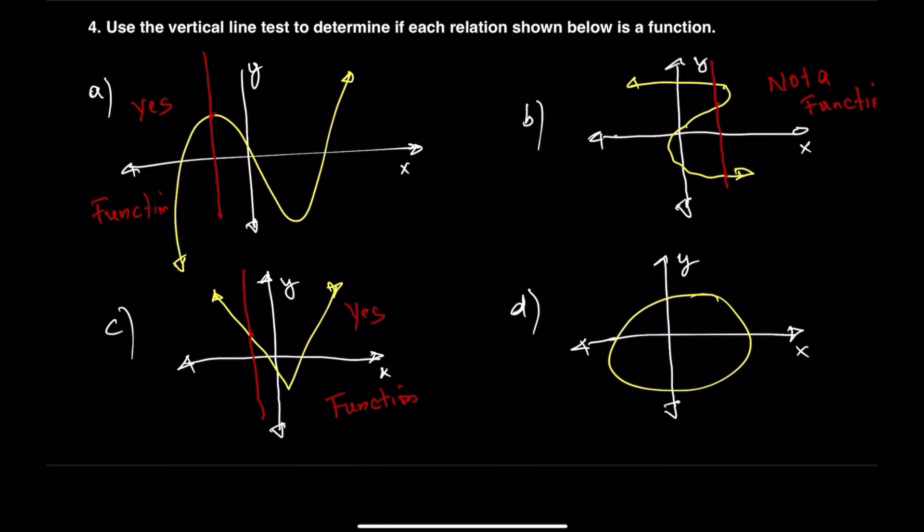Finally, let's look at the last graph, which shows a circle. If we draw a vertical line through it, we can see that the line touches the circle in two different spots. Because a vertical line hits more than one point, this graph does not represent a function.